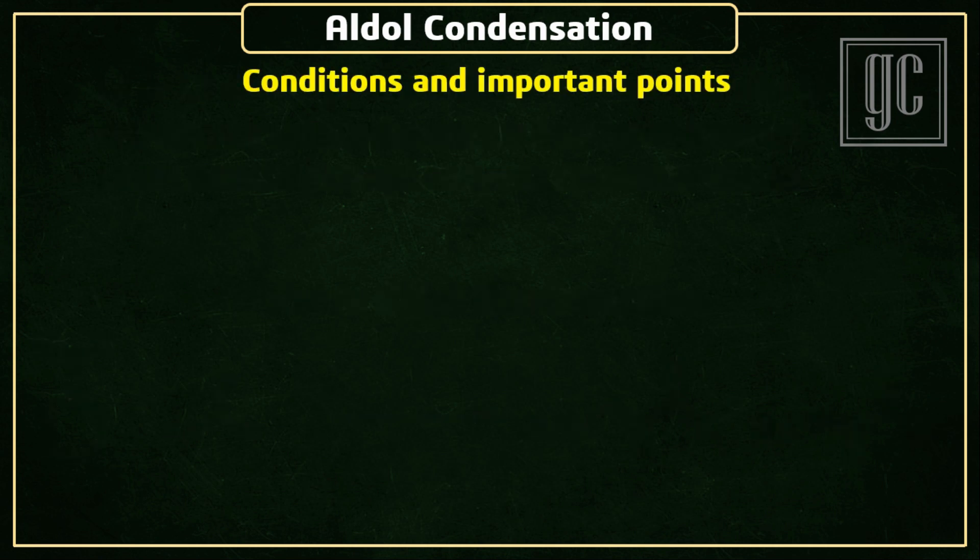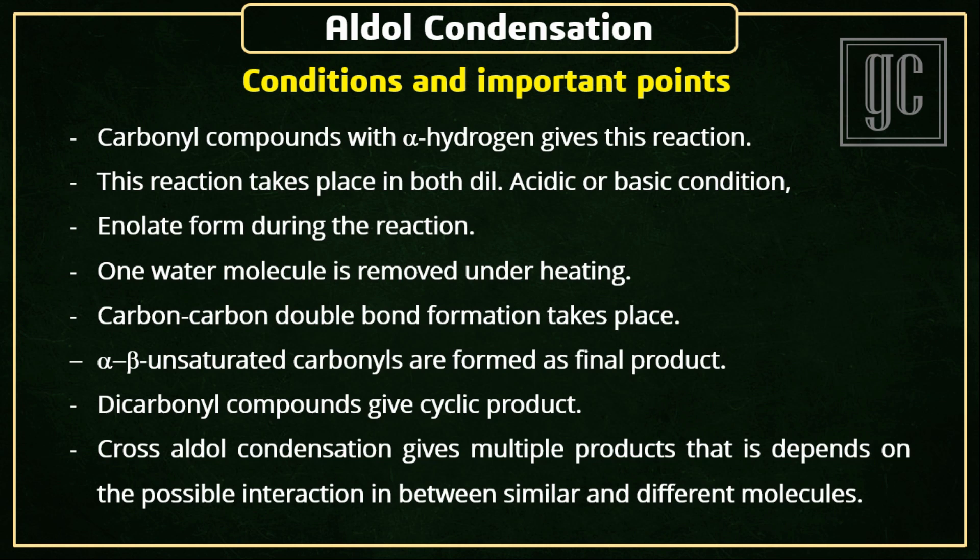Next are the conditions and important points for this reaction. Carbonyl compounds with alpha hydrogen give this reaction. This reaction takes place in both dilute acid or basic conditions. Enolate forms during the reaction. One water molecule is removed under heating conditions and carbon-carbon double bond formation takes place; alpha-beta unsaturated carbonyls are formed as the final product. Dicarbonyl compounds give cyclic products. Cross aldol condensation gives multiple products, depending on the possible interactions between similar and different molecules.